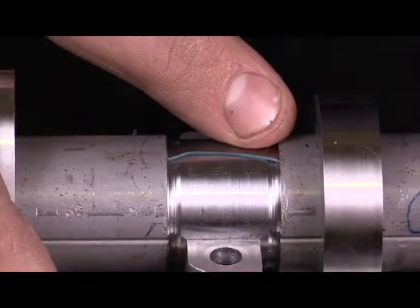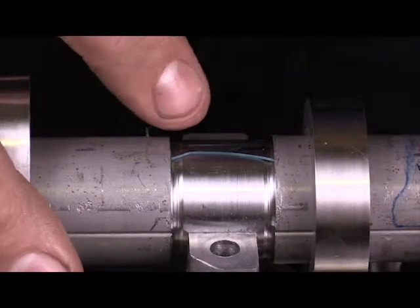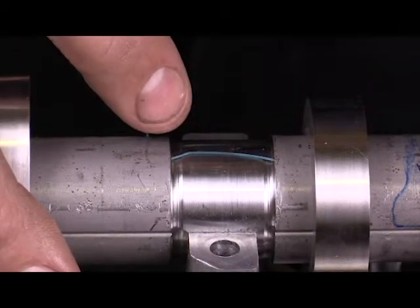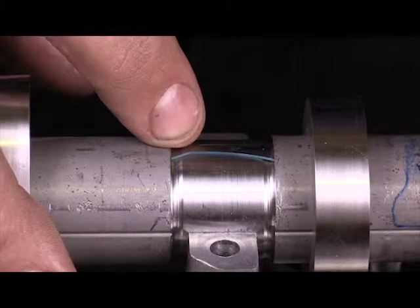It's important to put the plastic gauge all the way across the journal. That way I can see if there's any imperfections on one side of the journal or the other, if it's tapered. This will help me to identify that.